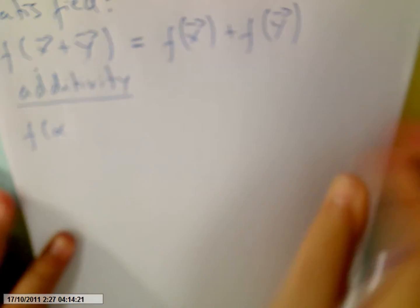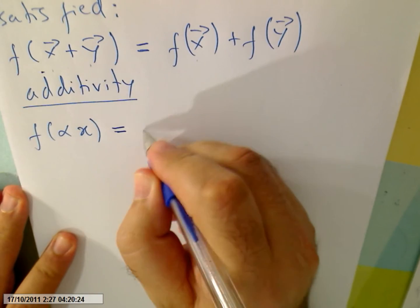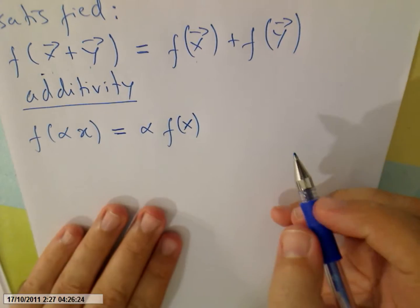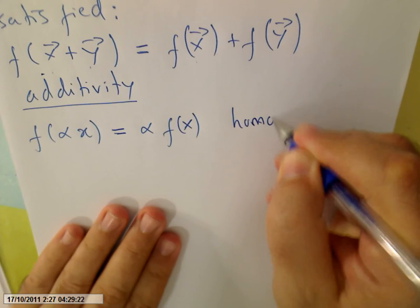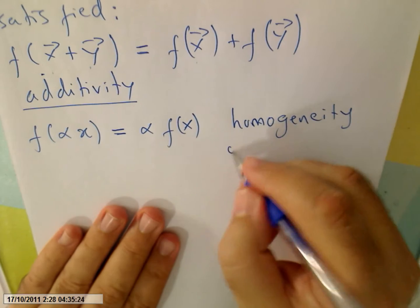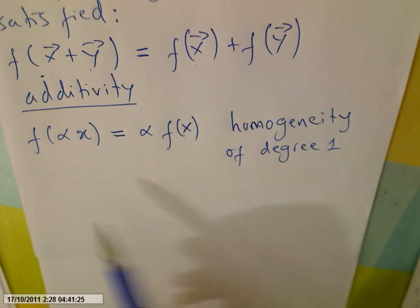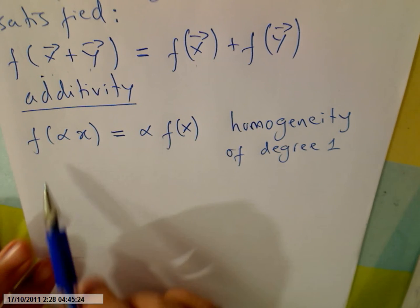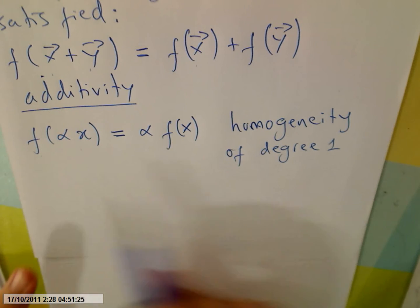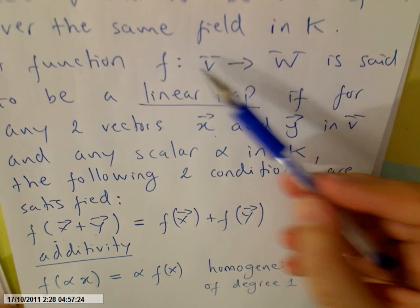The second property: f of alpha x, with alpha in the field, equals alpha times f of x. This property is called homogeneity of degree one. A function is called homogeneous if f(αx) = α·f(x); degree one because alpha appears to the first power.